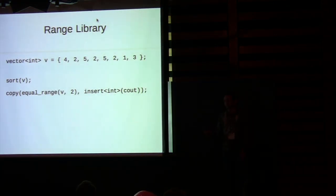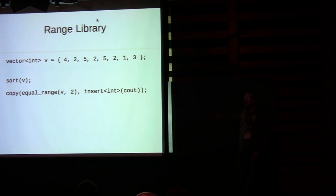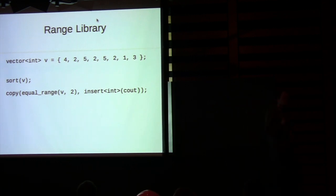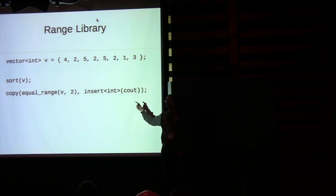What's a range library? Chandler talked about what a range is, which means I don't have to cover that — I can just talk about what a range library is. A range library is essentially: we want to do this. We don't want to write sort v.begin, v.end. We want to write sort v.